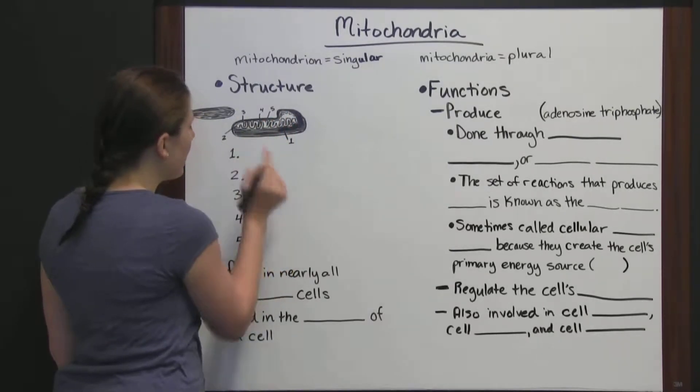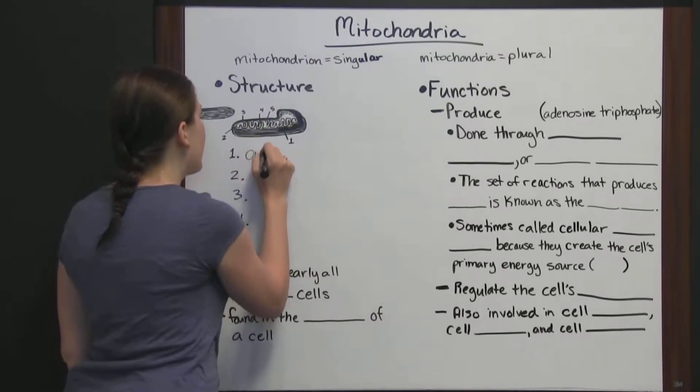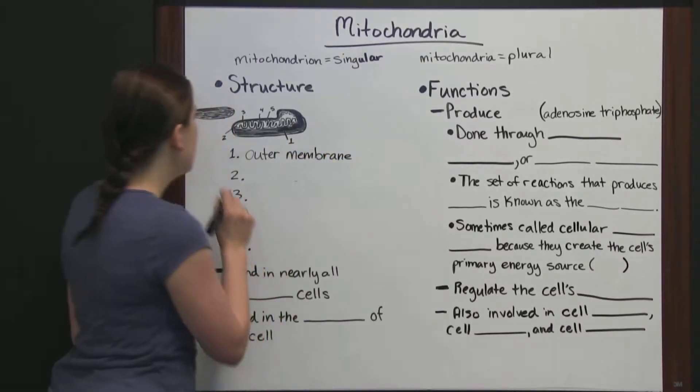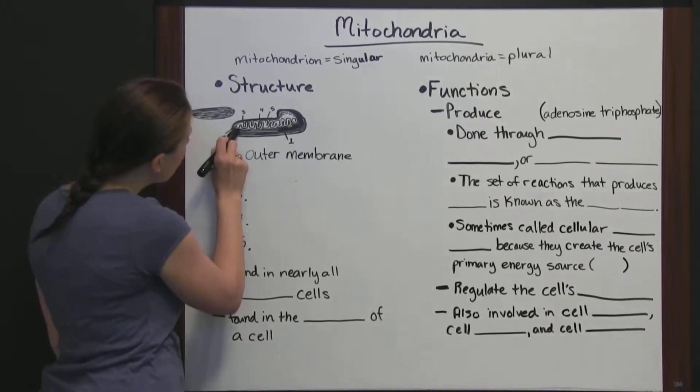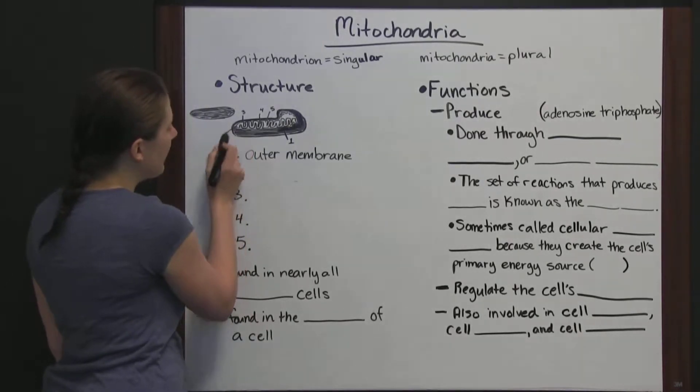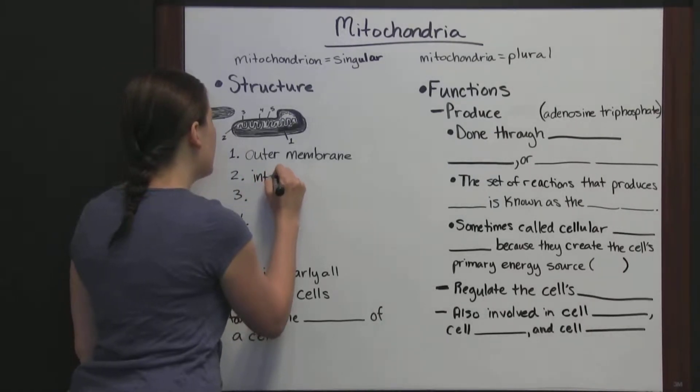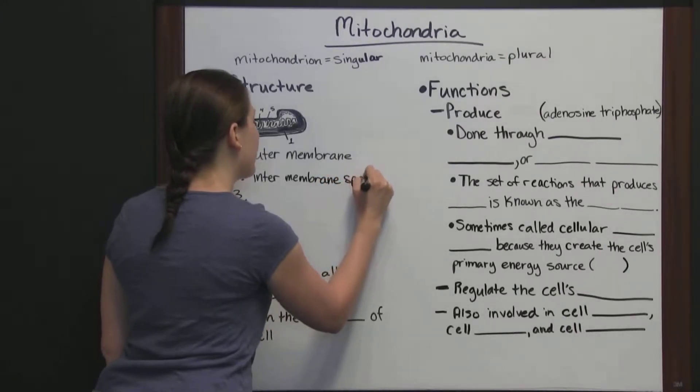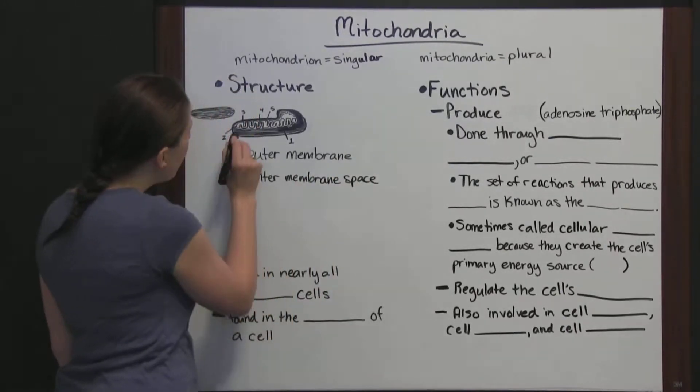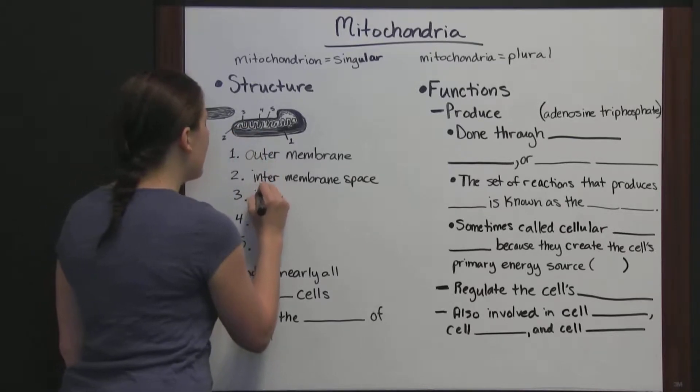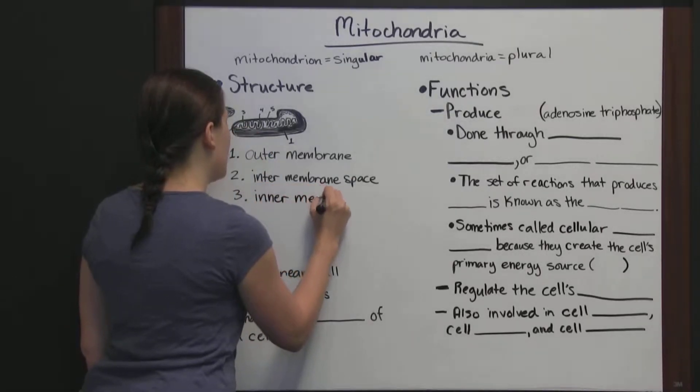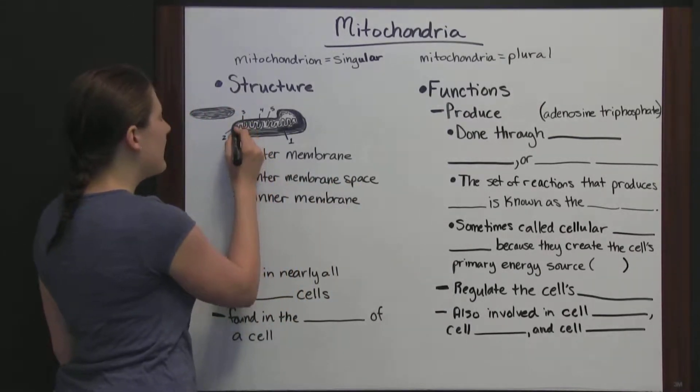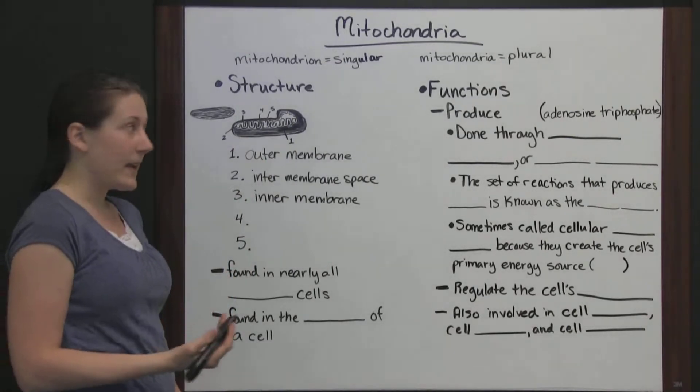This outer layer that you can see is called the outer membrane. Next, this space in here between the outer membrane and this next line is called the inter-membrane space. And then, this next line is the inner membrane. So, that makes sense, right? You've got your outer membrane, your inner membrane, and then the space between it is just the inter-membrane space.